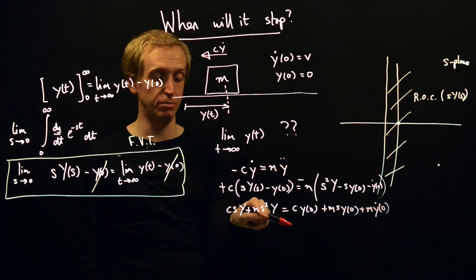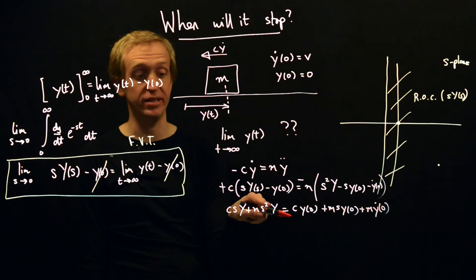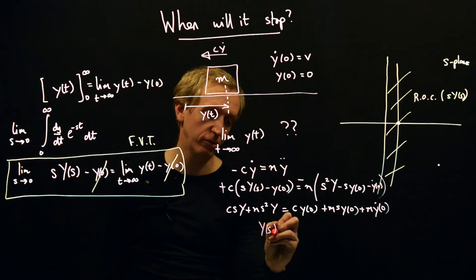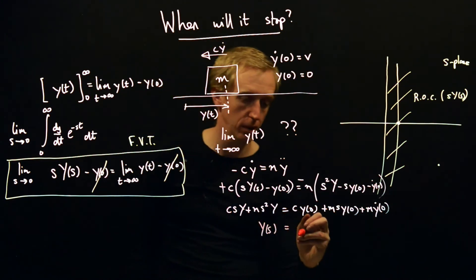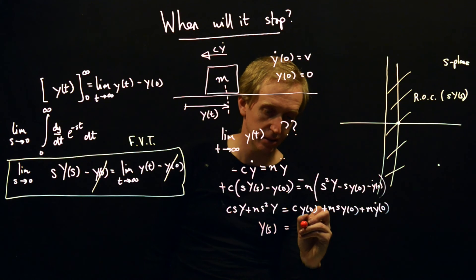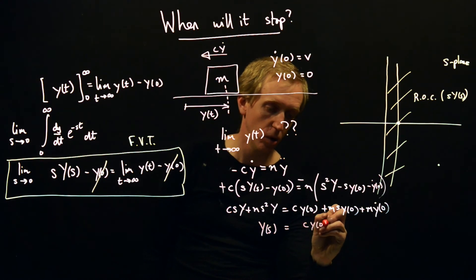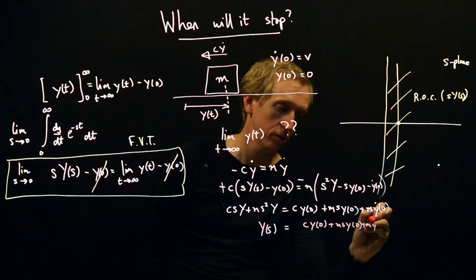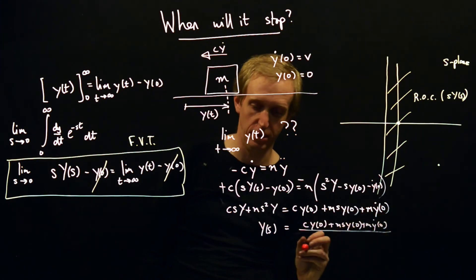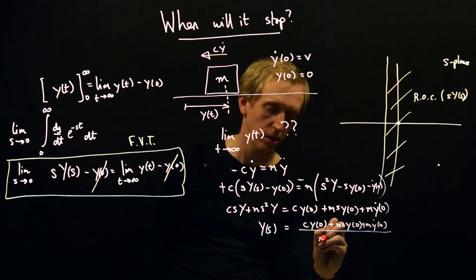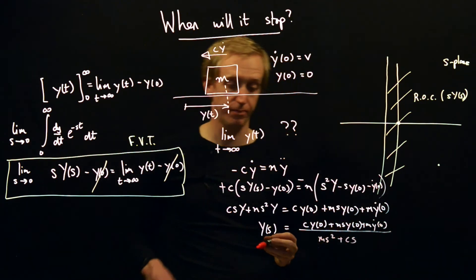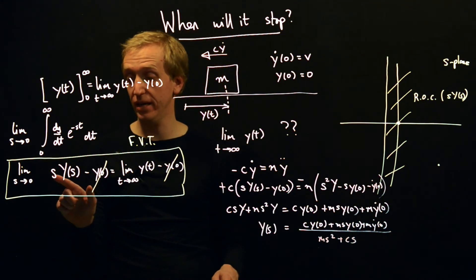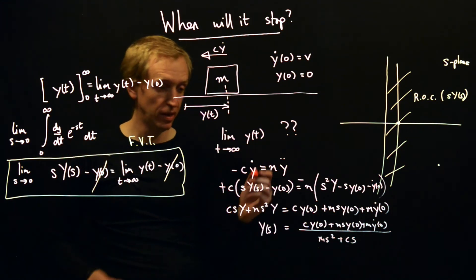So almost there now, we want to know what y(s) is, so we need to get everything else on the left, and we find that y(s) is equal to c*y of zero plus m*s*y of zero plus m*y dot of zero, all divided by m*s^2 plus c*s. Okay, we found y(s). To apply the final value theorem, we need to find s times y(s). So let's do that.